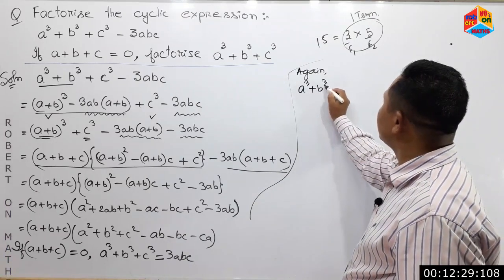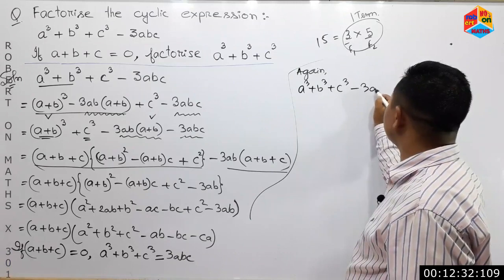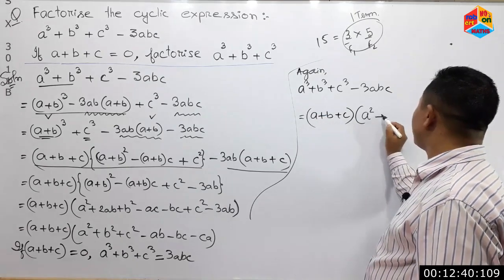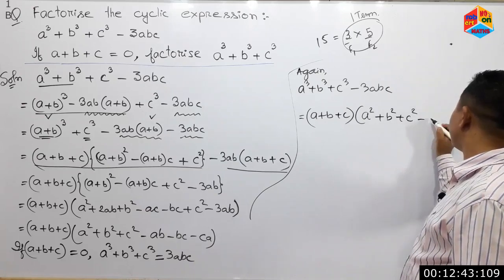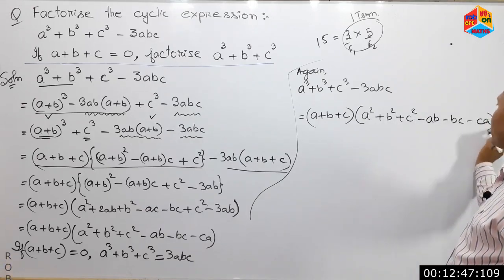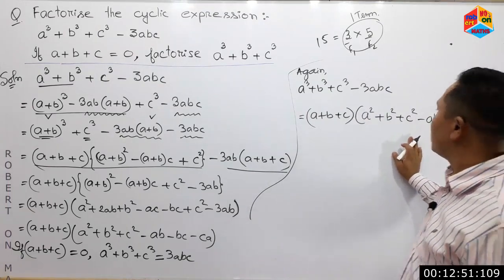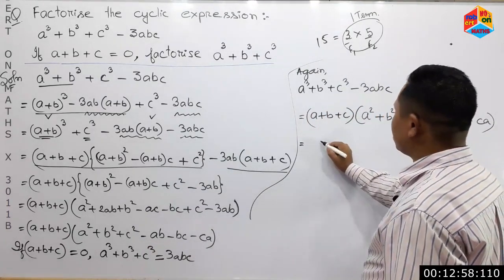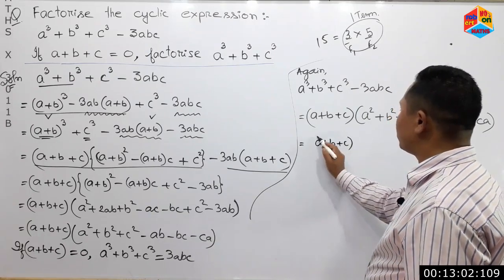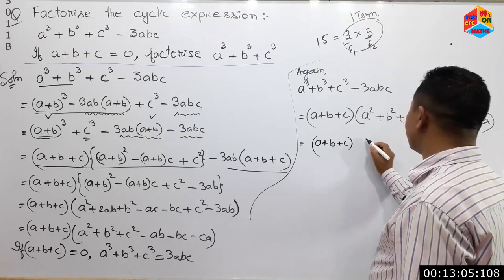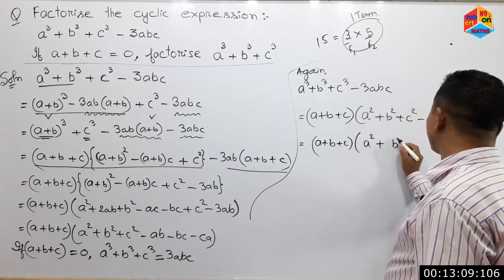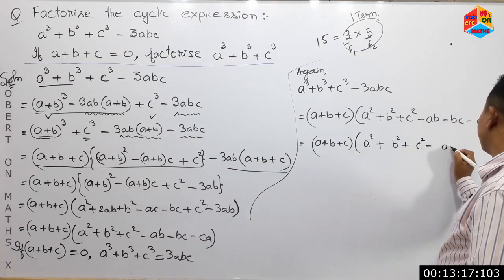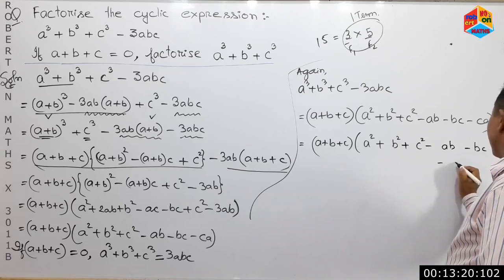A cube plus b cube plus c cube minus 3abc equals, in Canada, a plus b plus c, times a square plus b square plus c square minus ab minus bc minus c.